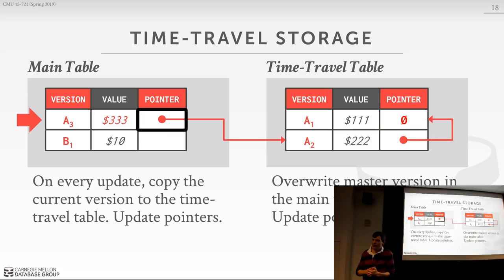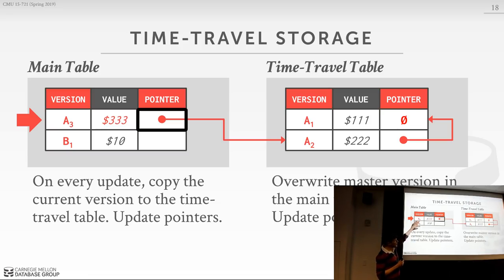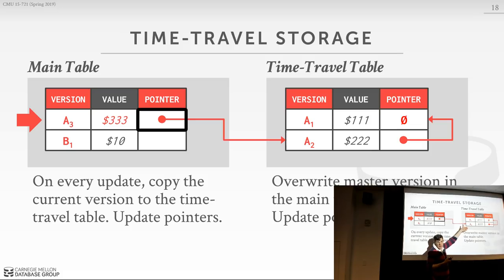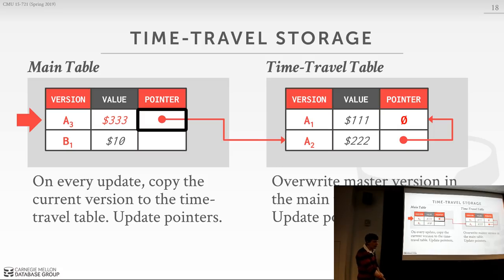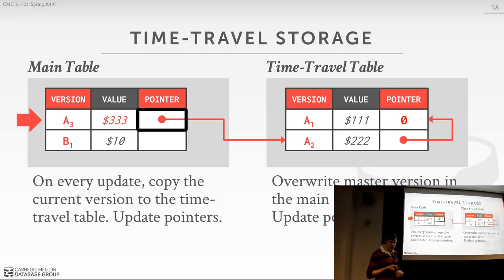One advantage of time travel storage is that since the main table always has the latest version, when you do garbage collection you can just blow the entire time travel table away without scanning anything in the main table. Another obvious advantage: sequential scans are super easy because you just rip through the main table without following version chain pointers to figure out what version to look at — you still check visibility, but no pointer chasing. This is what SAP HANA does, and it's also what you get with Microsoft SQL Server's time travel query support.